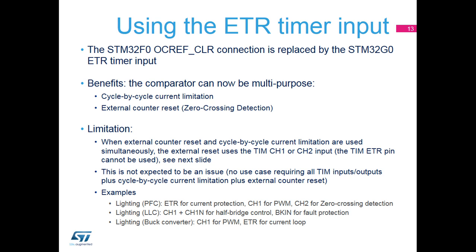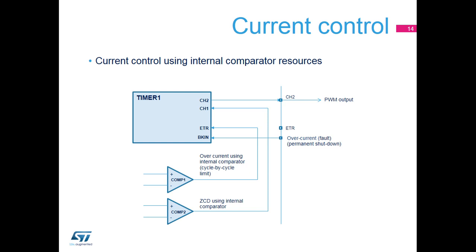When both are needed simultaneously, the current limitation is based on the ETR timer input and a counter-reset is signaled through a timer channel input. The figure represents an example of direct connection between timer and comp units. Over-current limitation uses the ETR input and external reset uses the CH1 input.